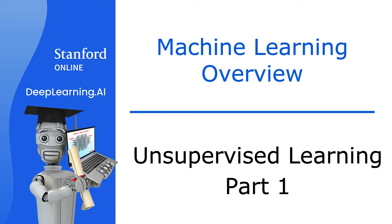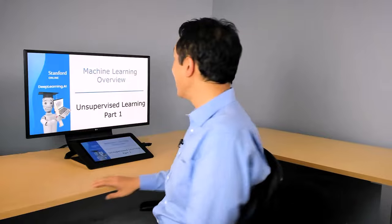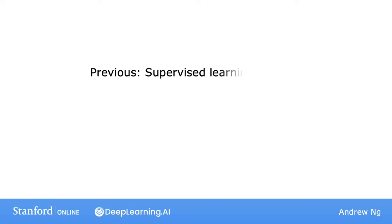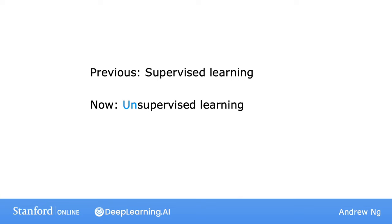After supervised learning, the most widely used form of machine learning is unsupervised learning. Let's take a look at what that means. We've talked about supervised learning, and this video is about unsupervised learning. But don't let the name unsupervised fool you — unsupervised learning is, I think, just as super as supervised learning.